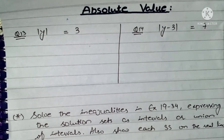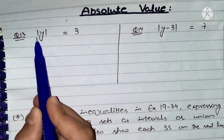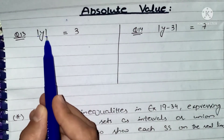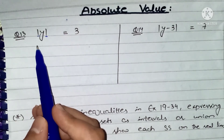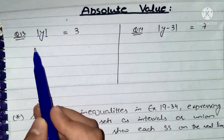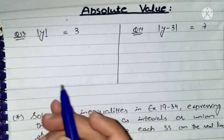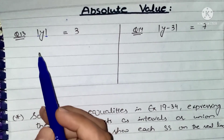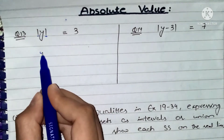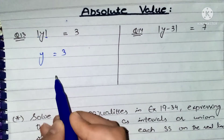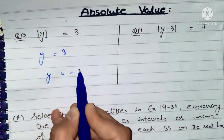Let's start question number 13. First of all, you will see the new thing here. We also call it Mod and Absolute. Whatever the value of these things, we will write one positive and one negative. In question number 13, what we call Mod of Y equals 3 means that Y is 3 and also Y is minus 3.